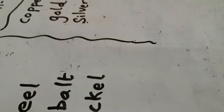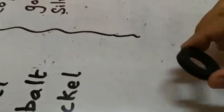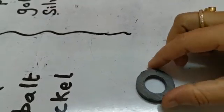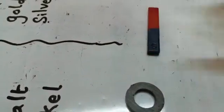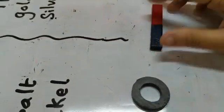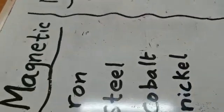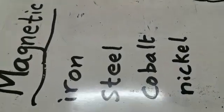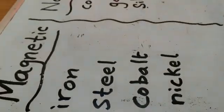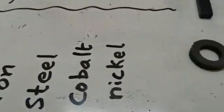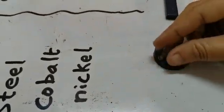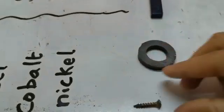Now I am going to check some of the materials, whether they are magnetic or non-magnetic. First of all, I am going to take a ring magnet and a bar magnet here — two magnets. The first material I wrote here is iron. I am going to take an iron screw. Can you see the iron screw?